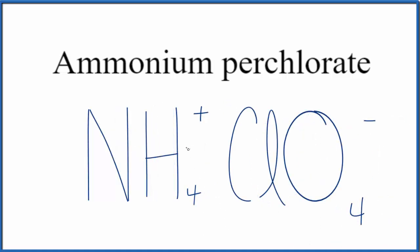When we have a compound with the ammonium ion and then another polyatomic ion, we consider this an ionic compound. We have two ions, the ammonium ion and the perchlorate ion.